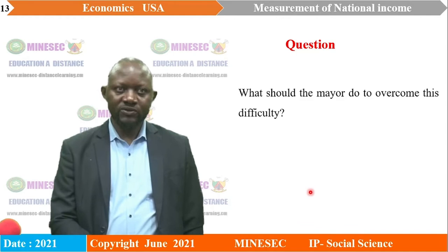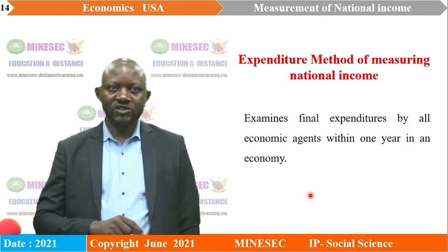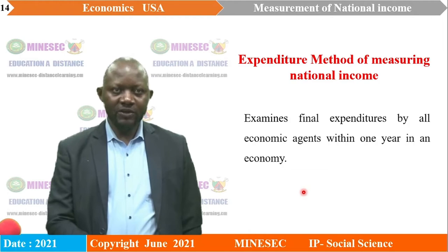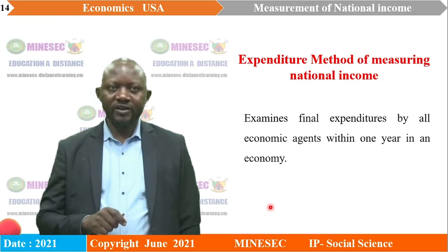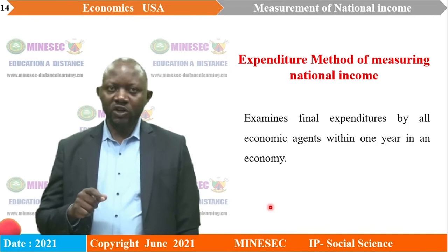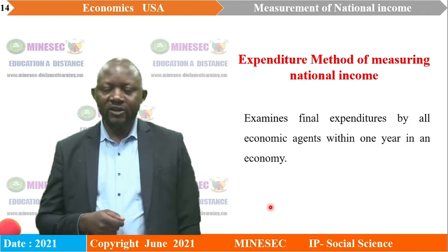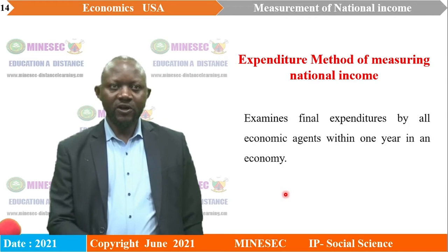Let's start with the expenditure method. It examines final expenditures by all economic agents within one year in an economy. We had earlier seen the output method, measuring the physical output of goods and services in primary, secondary and tertiary sectors. We equally saw the income method, measuring the rewards obtained by the various factors of production. This time, we are looking at expenses — all the expenses in getting the final goods and services.